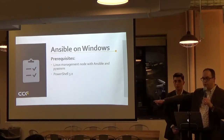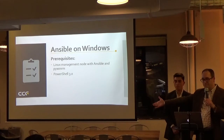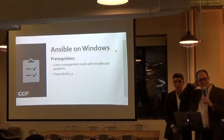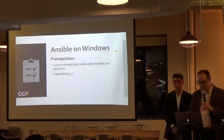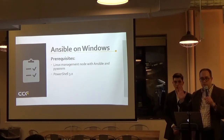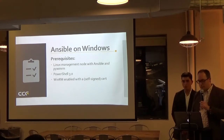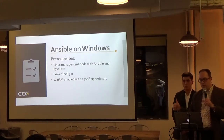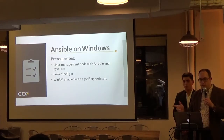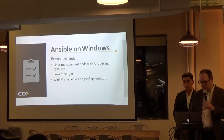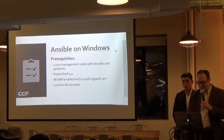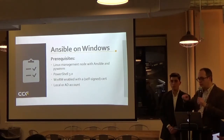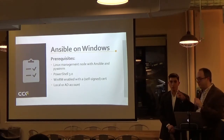The target machine has to have PowerShell 3.0 or later — that goes back to Windows 2008. You also need to have WinRM enabled and some kind of certificate; you can do self-signed. There's a script that Ansible provides that enables WinRM and installs a self-signed cert all in one shot — really simple and straightforward. And then you have to have some kind of account that Ansible can use to log into the machine, ideally with the necessary rights to do whatever you're trying to accomplish.